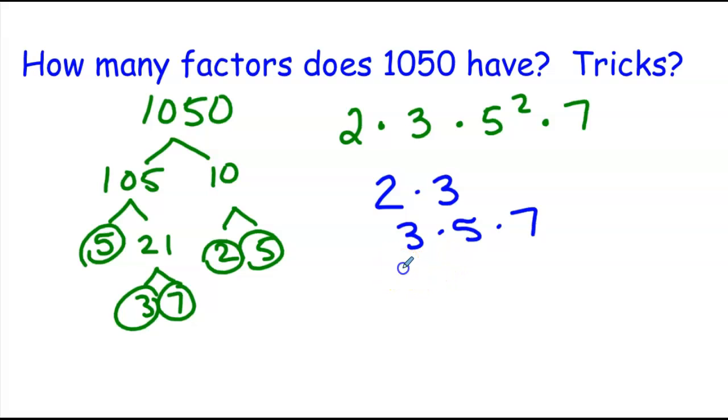We could have a 3 times a 7, 21. Any combination here, we can use any of the numbers or none of them, and that gets a factor. So with that in mind, we're going to use something called the multiplication counting principle to figure out the final number of factors.